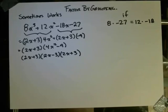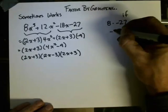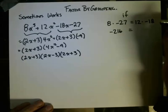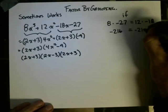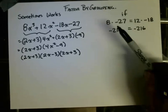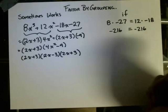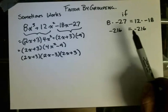And it is, so negative 216 is equal to negative 216. If 8 times negative 27 is equal to 12 times negative 18, and it is, then I can probably factor this by grouping.